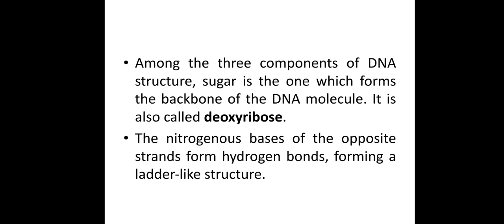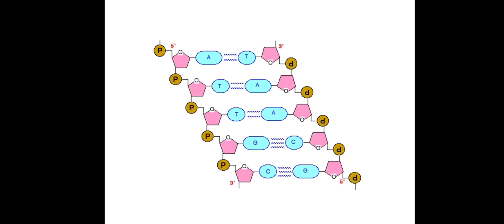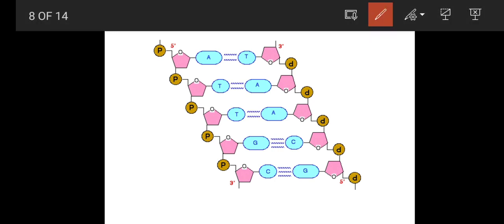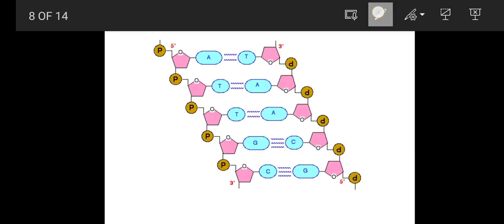Among the three components of DNA structure, sugar is the one which forms the backbone of the DNA molecule — it is called deoxyribose. The nitrogenous bases of the opposite strands form hydrogen bonds, forming a ladder-like structure. The base pairs on the opposite direction form hydrogen bonds which develop into a twisted ladder shape.